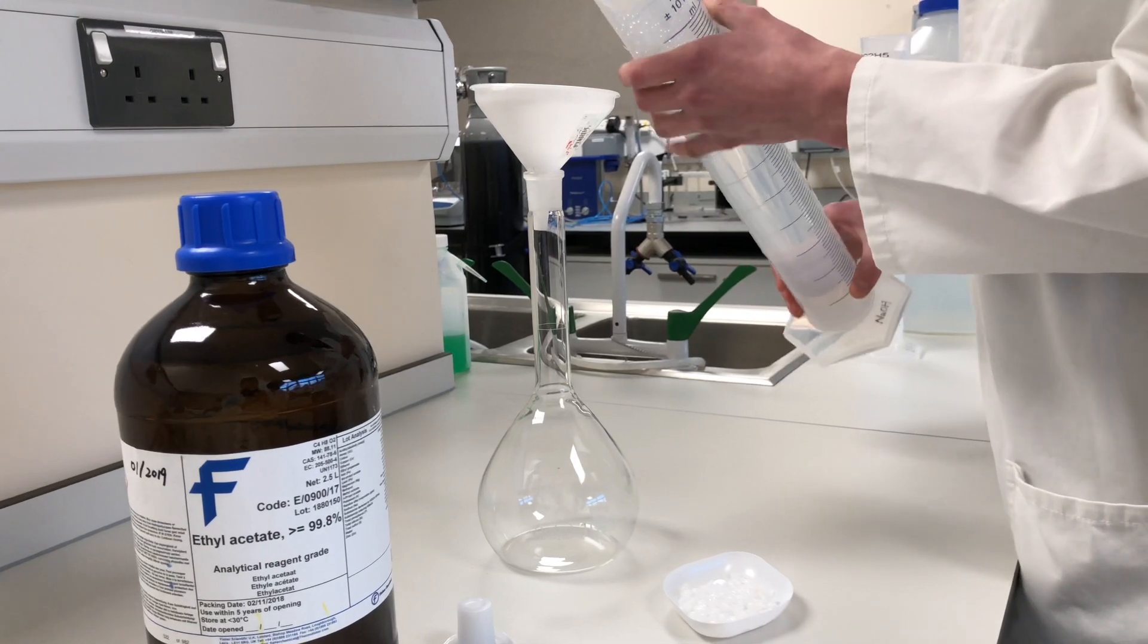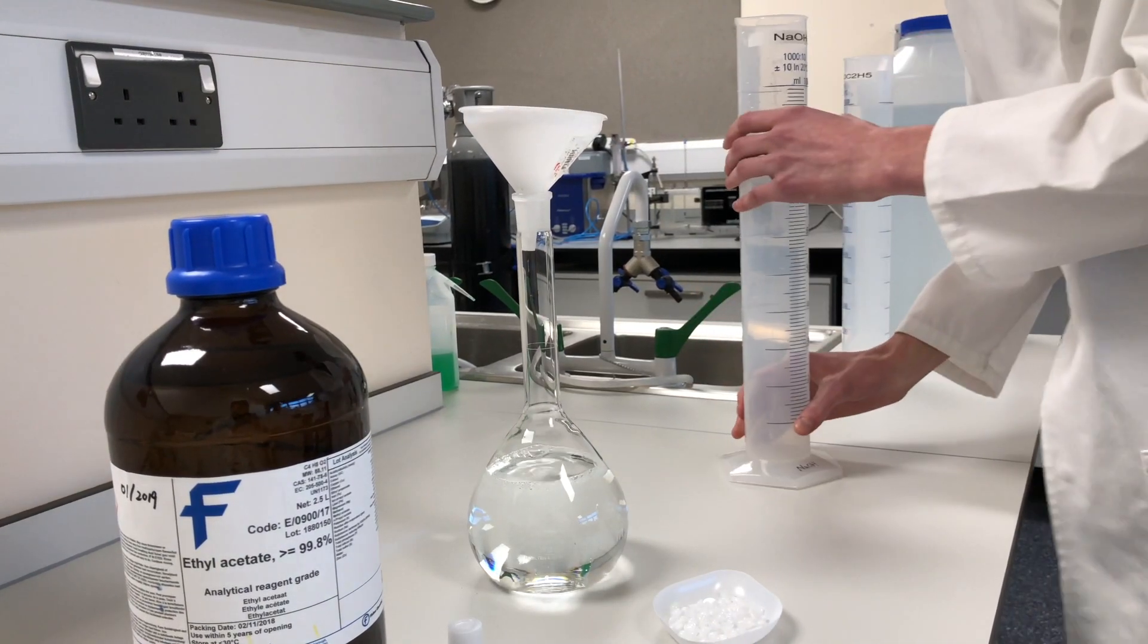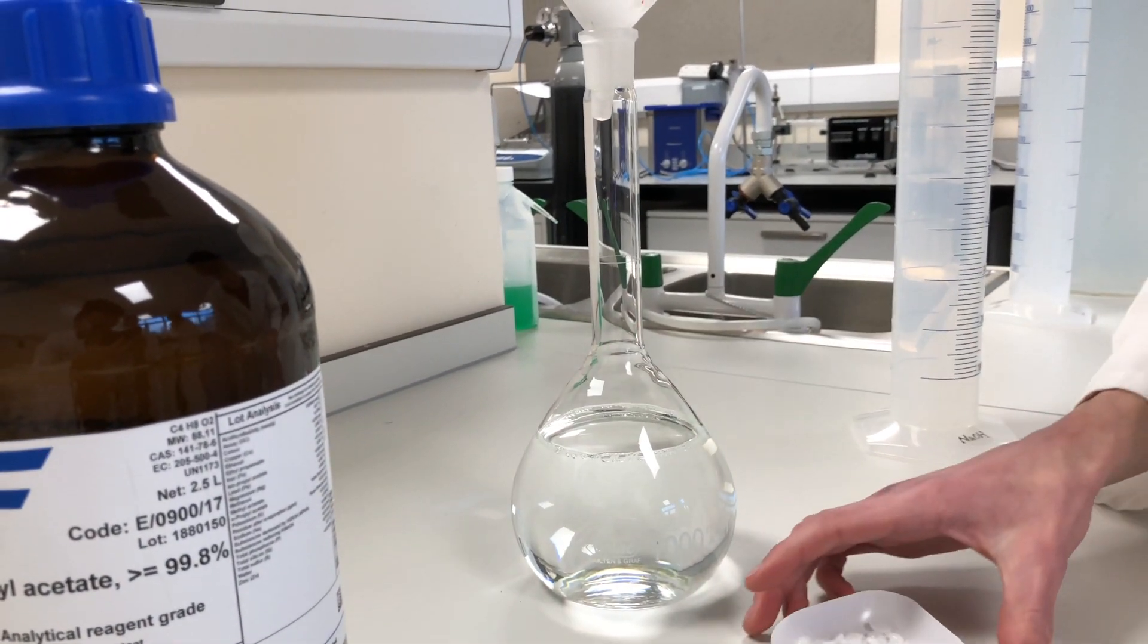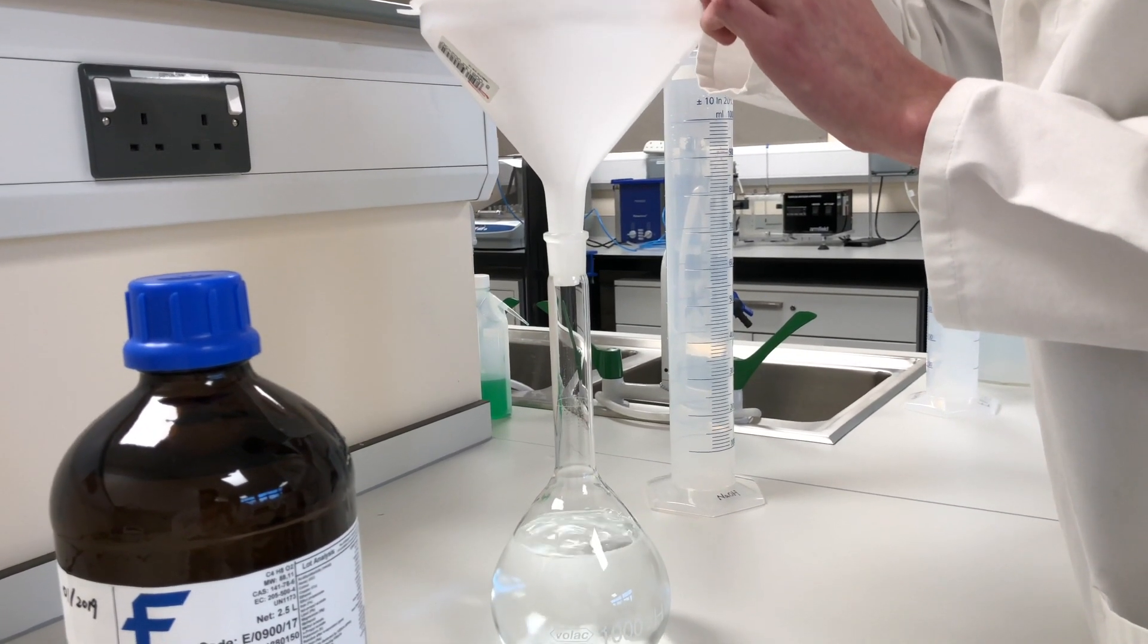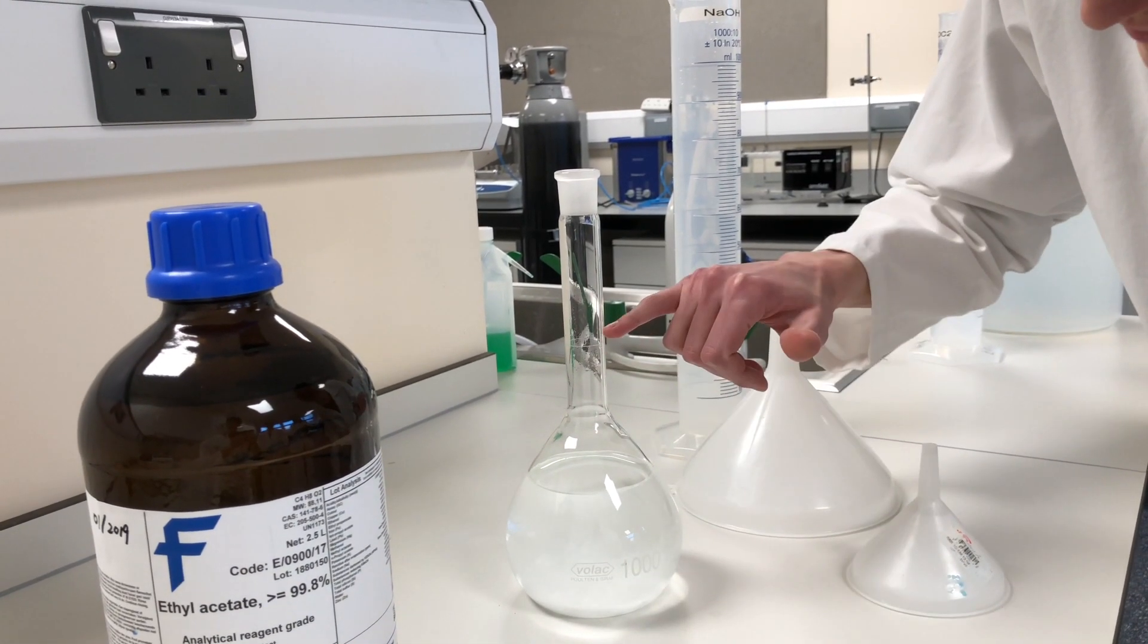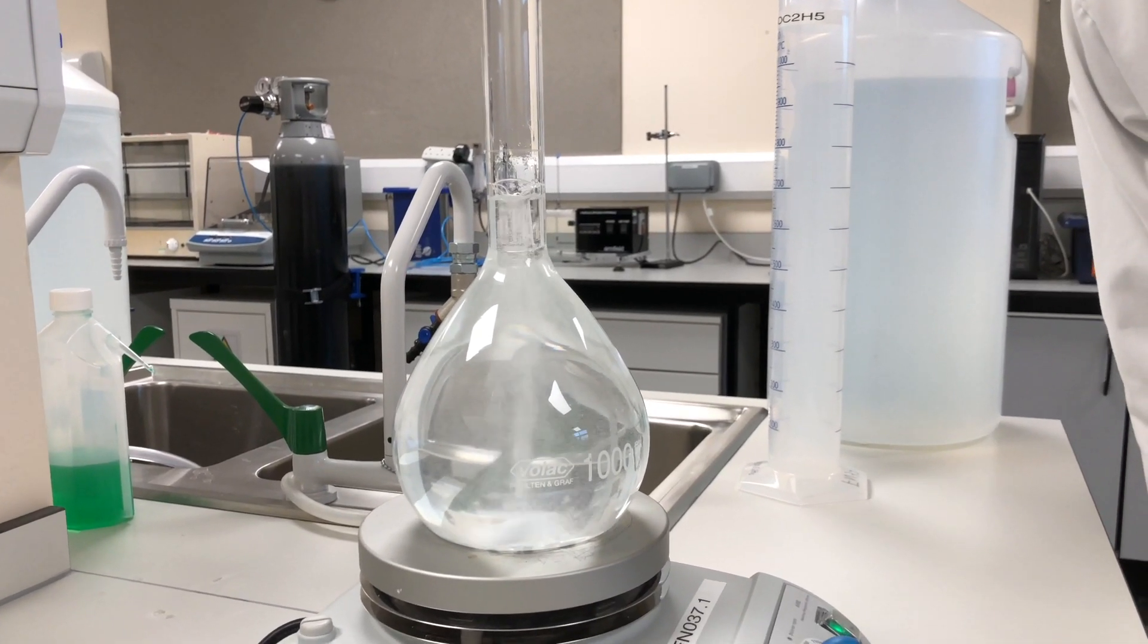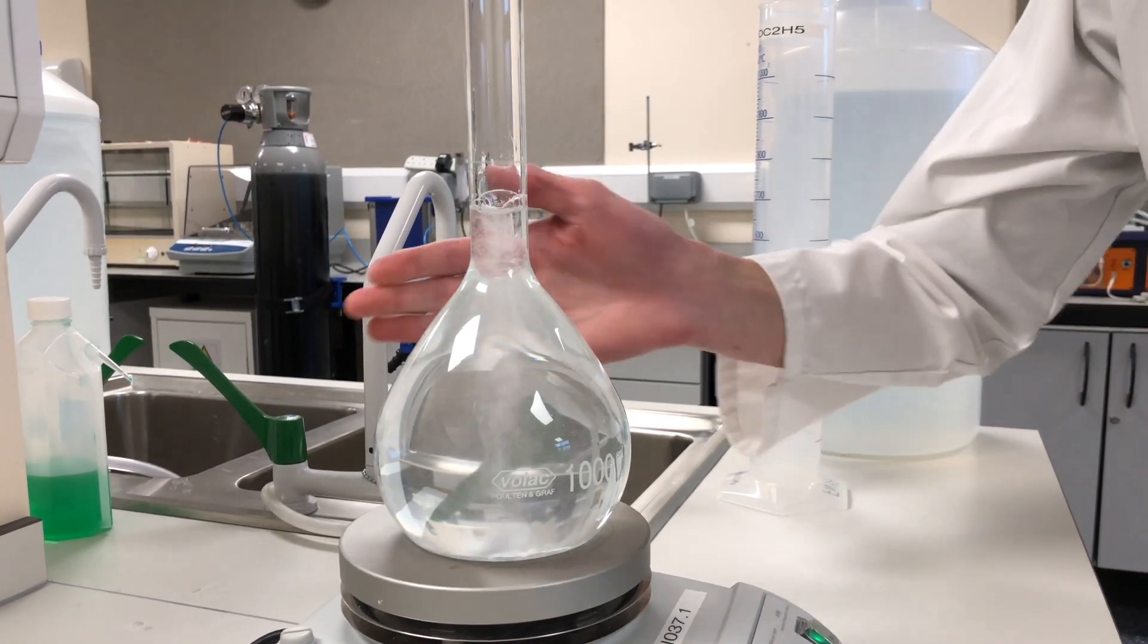We'll take this away and we will make the solution. So we have our flask here, and we're just adding some distilled water to it. You can see here that we've just fallen slightly short of the marking, because if we go above this, then we don't know the exact concentration. So we're just adding the sodium hydroxide pellets. Make sure we've got them all. The sodium hydroxide pellets have started to dissolve.